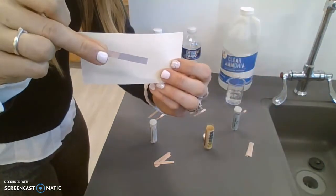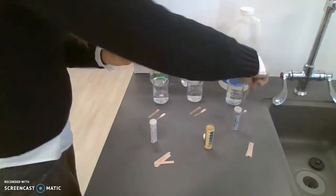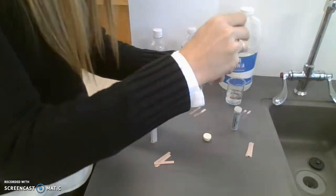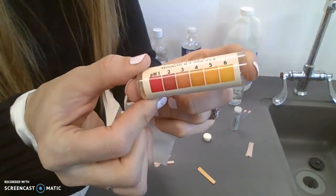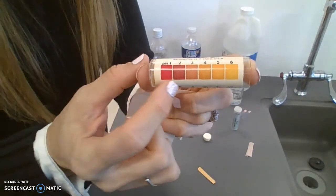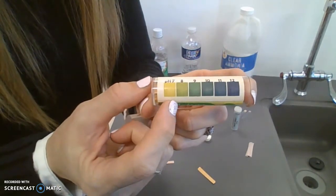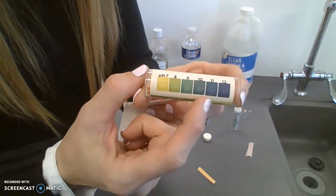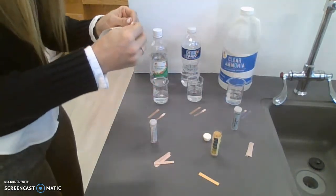Bases turn litmus blue. Bases are bitter and they turn litmus blue. So on this yellow litmus paper, we see a pH scale range 1 to 6, so it goes red, orange, yellow, and then a pH of 7, 8, 9, 10, 11, 12 goes from light green to blue to almost purple. We can test this.